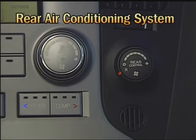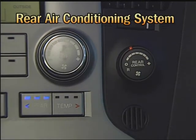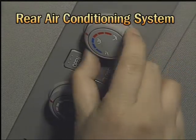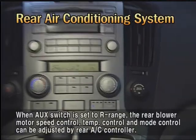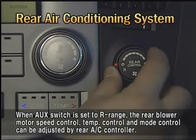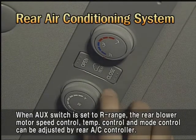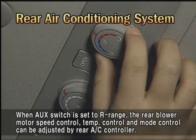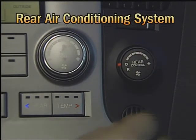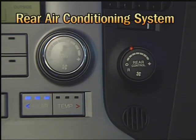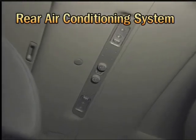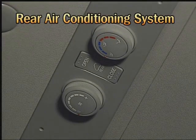As to the rear air conditioning system, the rear air conditioner is operated by the communication signal of the front air conditioner module and it can be controlled independently. When the auxiliary switch of the front air conditioner control module is set to R range, the blower motor speed control, temperature control, and mode control can be adjusted by the rear air conditioner control module. At any other position except R range, these controls are managed by the front air conditioner control module. The rear air conditioner control module is installed at the roof of the first and second rows.